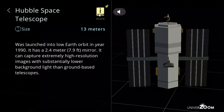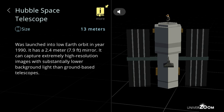Hubble Space Telescope, size: 13 meters. Was launched into low Earth orbit in year 1990. It has a 2.4 meter, 7.9 feet mirror. It can capture extremely high resolution images with substantially lower background light than ground-based telescopes.